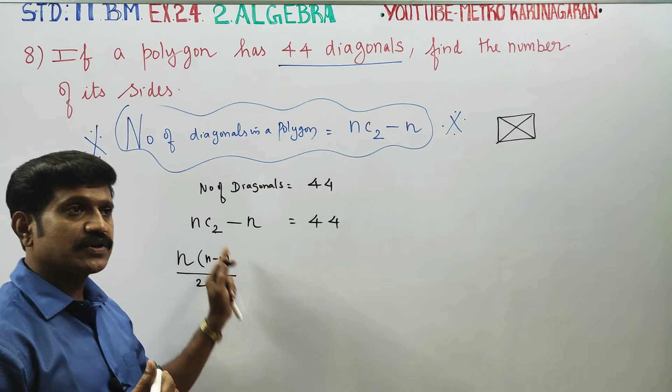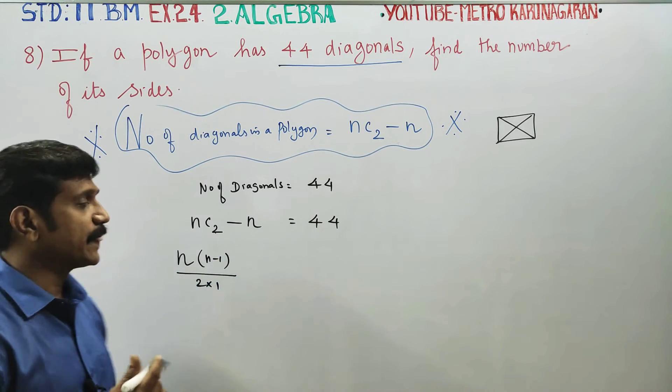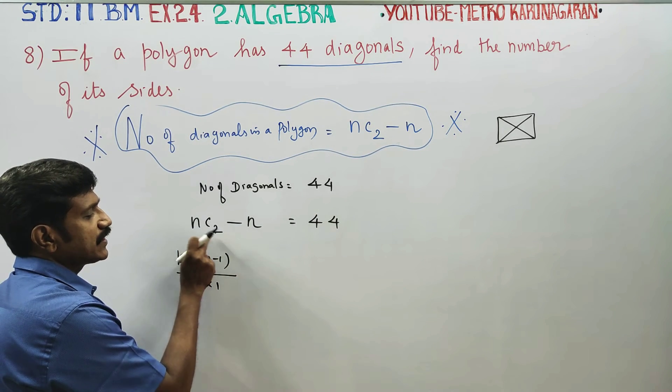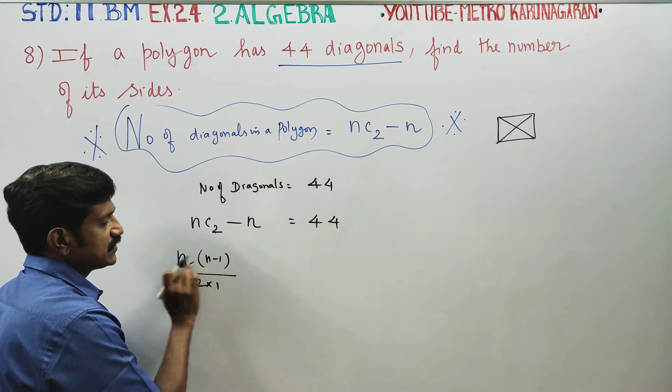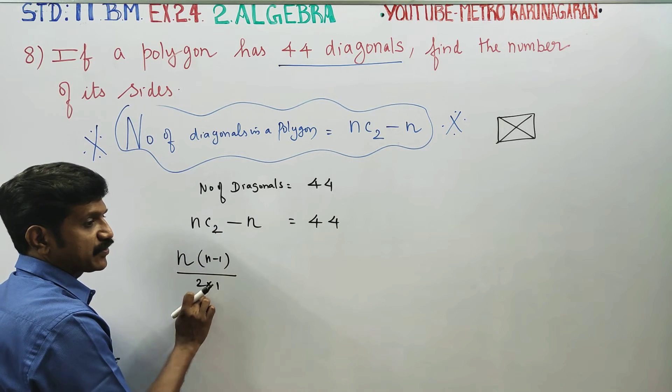nC4 is n(n-1)(n-2)(n-3) divided by 4 factorial. How many terms are there? 2C2 has 2 terms. Descending order divided by 2 factorial.